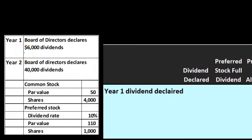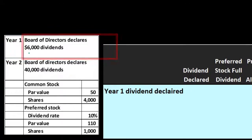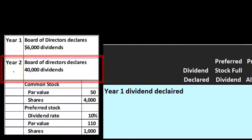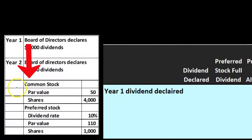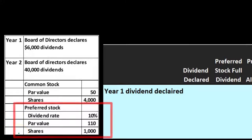Here's what we have: in year one, the board of directors declares a $6,000 dividend. In year two, the board of directors declares a $40,000 dividend. The common stock has a par value of $50 and 4,000 shares outstanding. The preferred stock has a dividend rate of 10%, a par value of $110, and 1,000 shares. That's the information we'll work with.